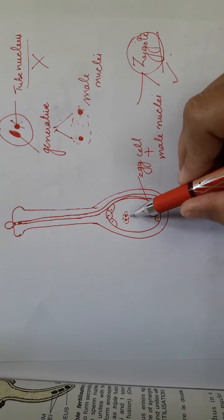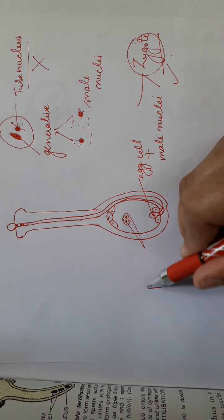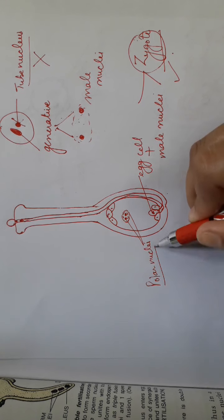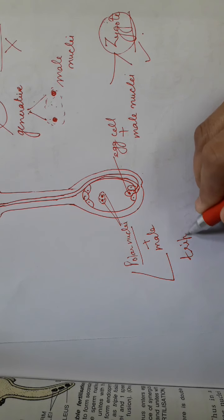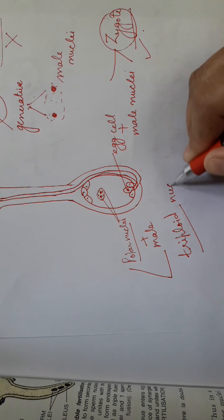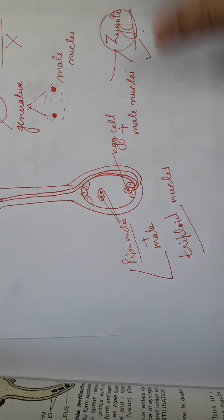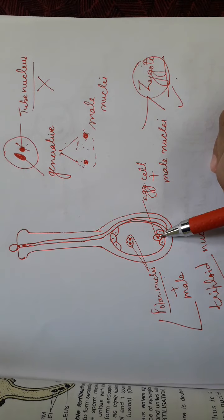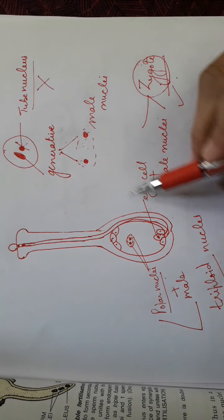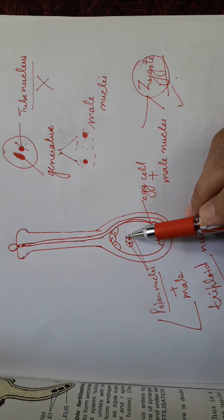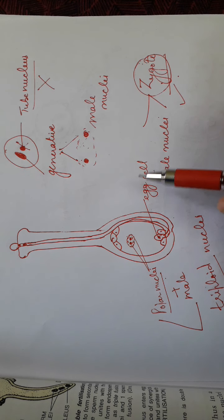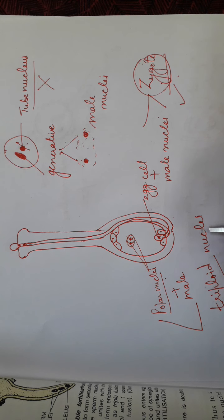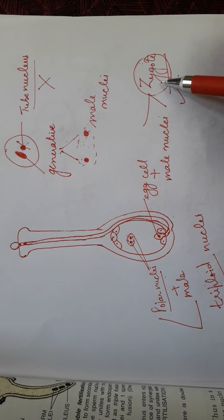The other male nucleus will make its way and fuse with the two polar nuclei already present in the embryo sac. Now it will become triploid, because it has become three nuclei — two polar nuclei and one male nucleus. So out of the two male nuclei, one fuses with the egg cell resulting in the formation of a zygote, and the other fuses with the two polar nuclei resulting in a triploid nucleus. There are therefore two fertilizations, which is why in angiosperms — in flowering plants — we say there is double fertilization.